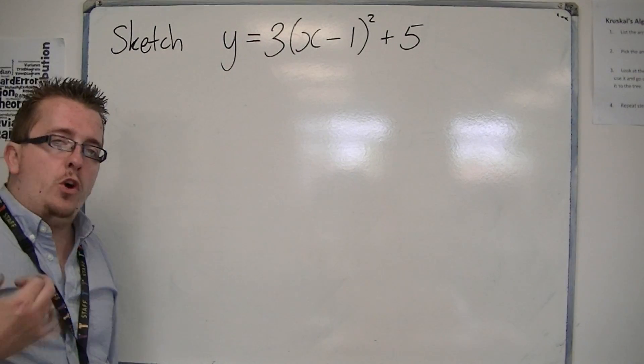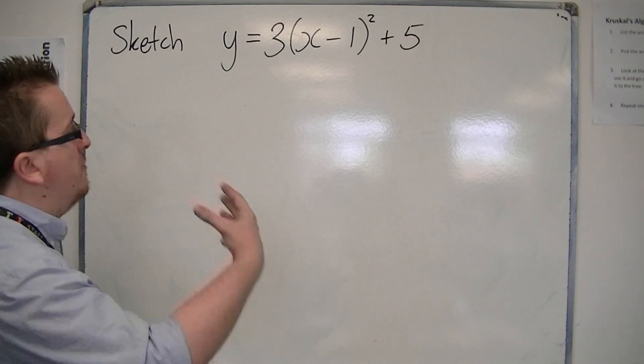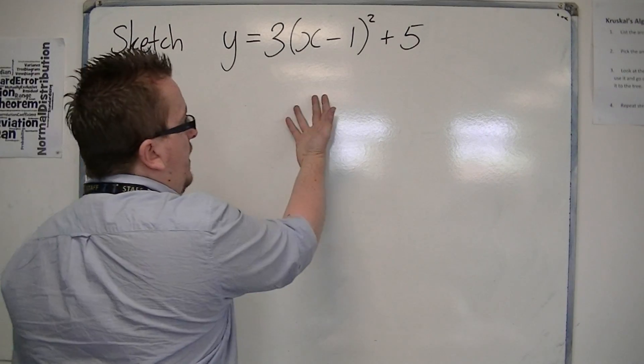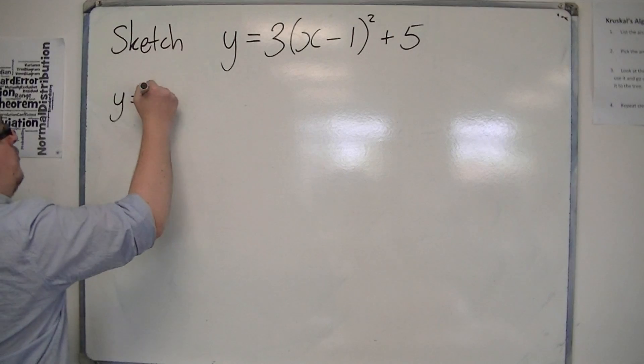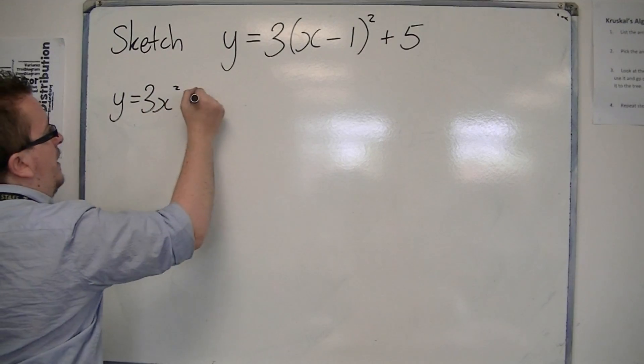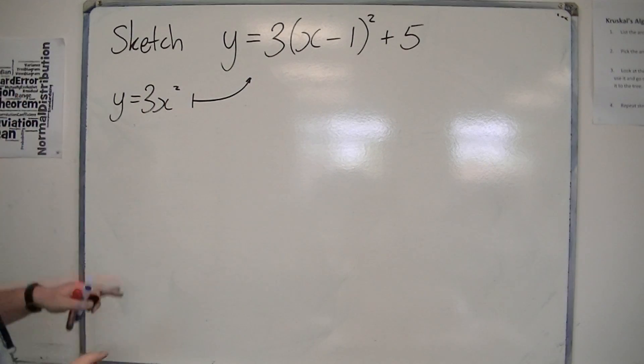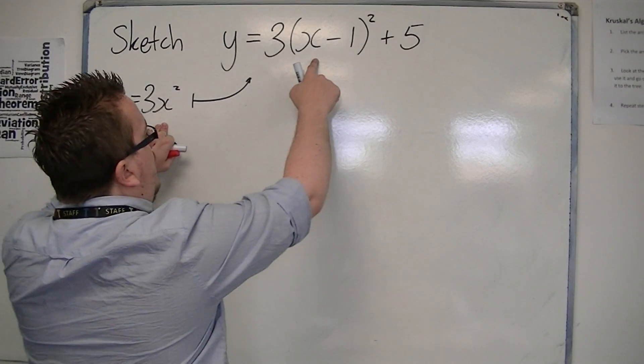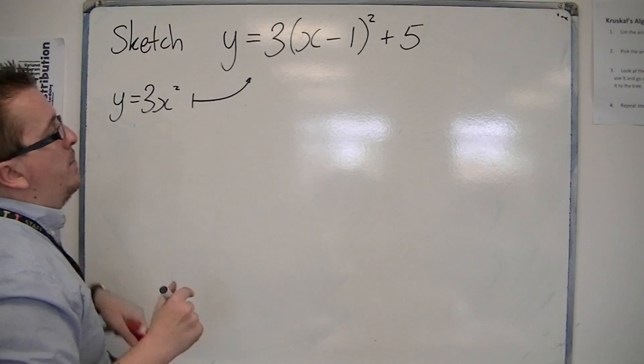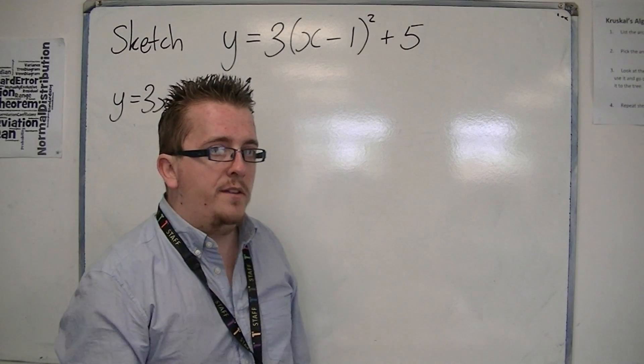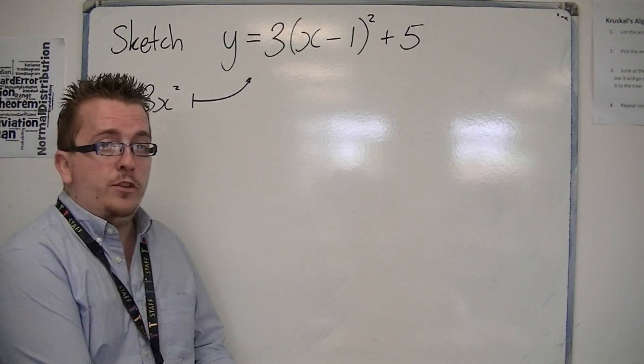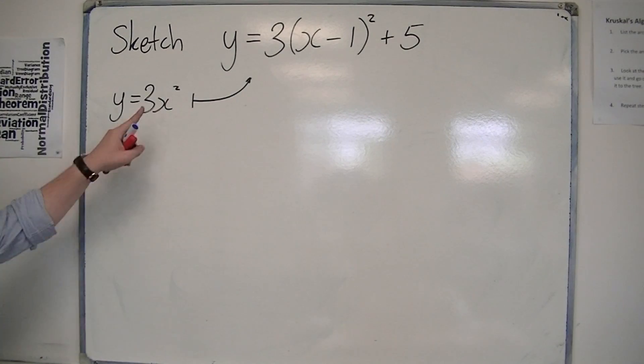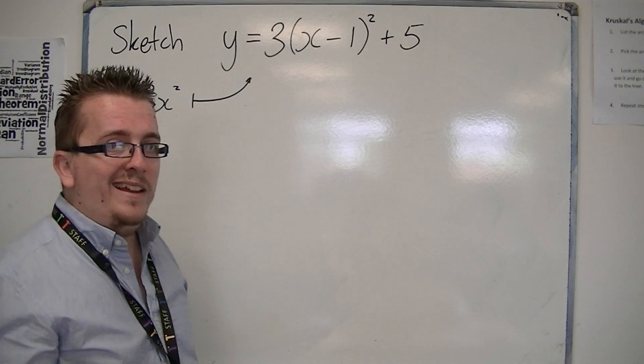Well, this time we're not looking at a translation from y equals x squared to this. You're actually looking at y equals 3x squared to this. So what's happened is the x has been replaced with x minus 1, and the y has been replaced with y minus 5. So in actual fact, we're just still dealing with the translation, it's just the original curve is slightly different.